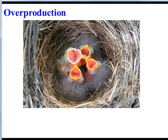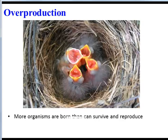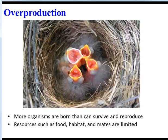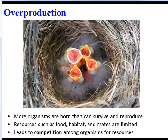One characteristic of populations is overproduction. In other words, in a population, more organisms are born than can actually survive and reproduce. This is because of limited resources, like food, habitat, or even mates. And oftentimes, limited resources will lead to competition among organisms.